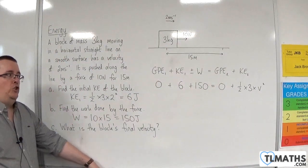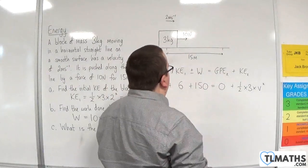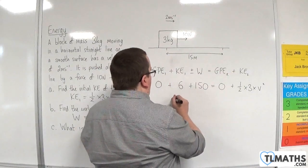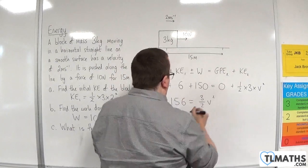And so we've got here an equation that allows me to calculate the final velocity. So we have 156 is equal to three-halves v squared.